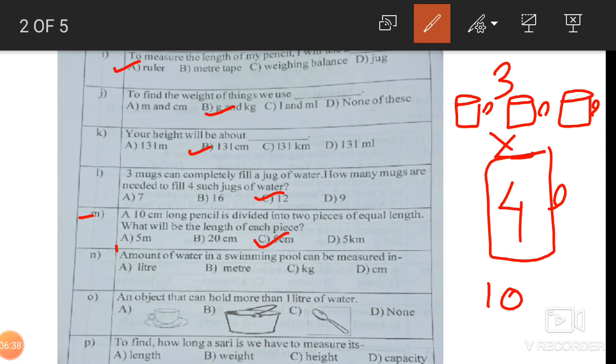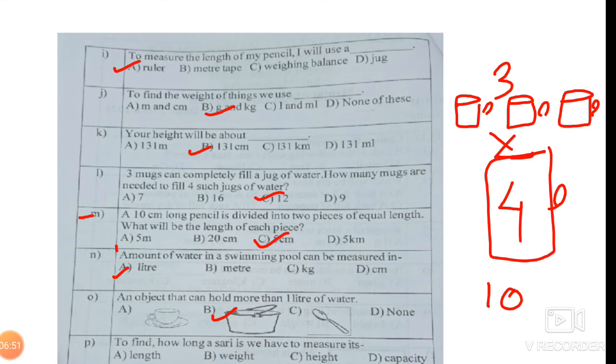Next, amount of water in a swimming pool can be measured - swimming pool water will be in liters. I have taught you this. An object that can hold more than 1 liter water - it will be in tub.